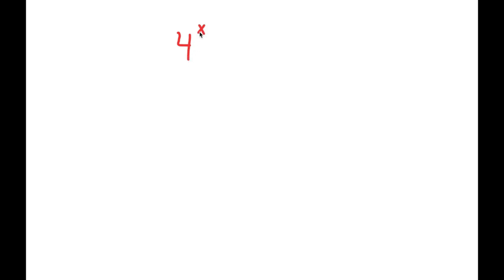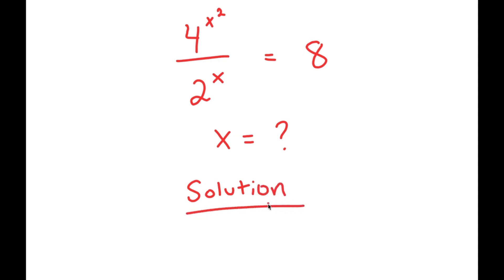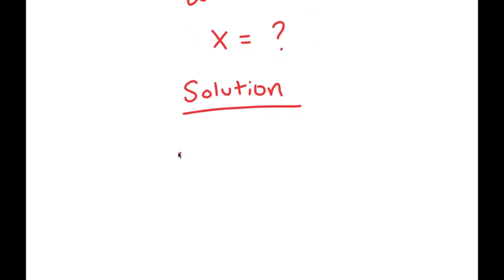So in this video I'm going to solve the equation 4 to the power of x squared over 2 to the power of x is equal to 8. The only variable I'm solving for in this equation is x. I'll first start by writing my equation down: 4 to the power of x squared over 2 to the power of x is equal to 8.